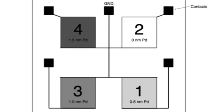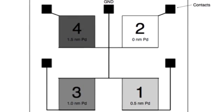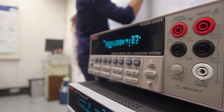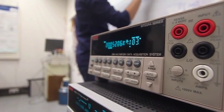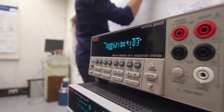The next step is the functionalization. On each sensor we evaporated a layer of palladium of different thicknesses. The resistances of our sensors are now modified and we can distinguish between them.